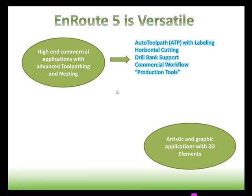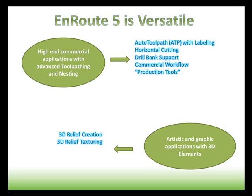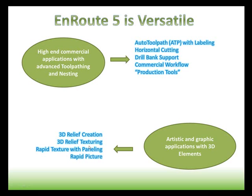In addition to that, we also have the ability to do artistic and 3D elements, and different types of 3D engravings and carvings. This includes relief creation, where you have a 3D surface and can incorporate different types of objects and apply different surfaces. We have 3D texturing, where you can duplicate a wood grain, tile texture, or basket weave. We have Rapid Texture, which is a different way of texturing with large profile tools — you can panel these into different size jobs and cover really unlimited size areas. And we have Rapid Picture, another capability to reproduce a picture. We also have an artistic workflow, giving you the ability to work in a freehand manner as well as in a more CAD and precise way.